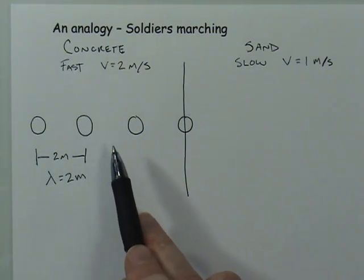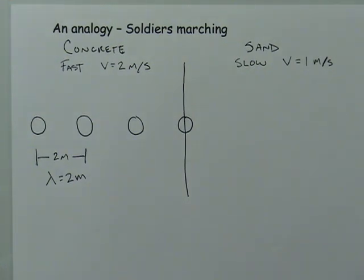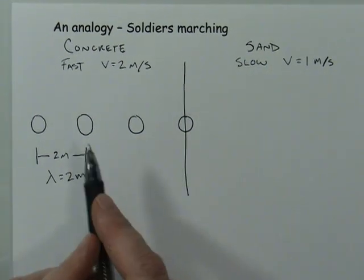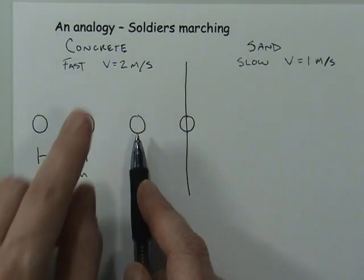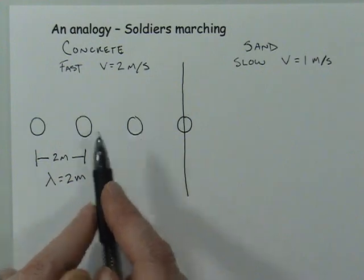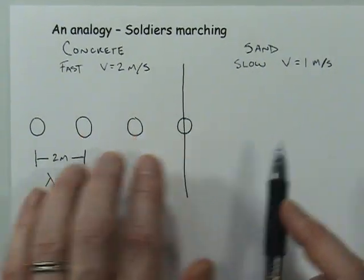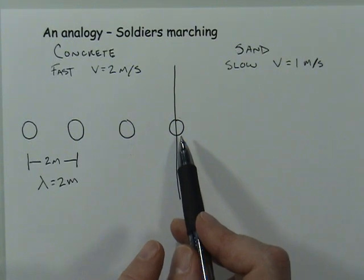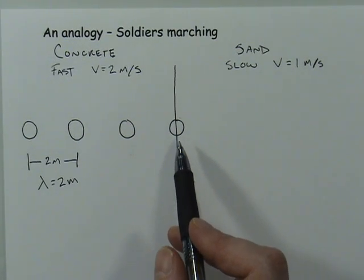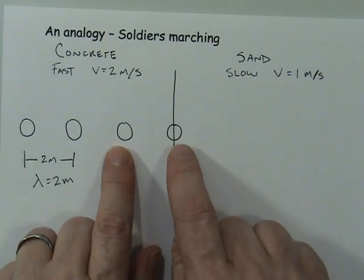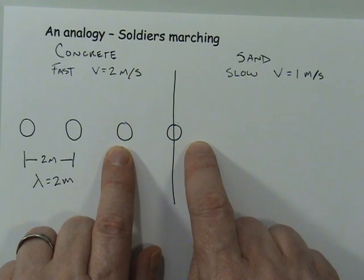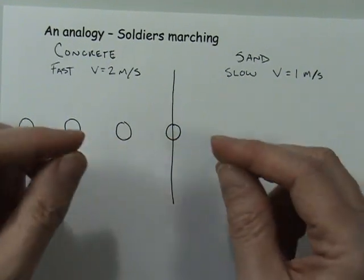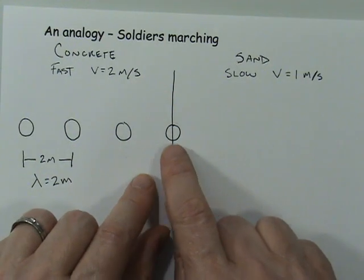The question is: what happens when they transition into the next medium? One second from now, this soldier will move over to be right at the border — he's traveled two meters, because he's traveling at two meters per second. Something really interesting happens when you hit the sand: as soon as that soldier steps into the sand, he slows down. The guy behind him will start traveling very slowly and only go one meter, while the guy behind him will travel two meters — so the distance between them will actually get shorter.